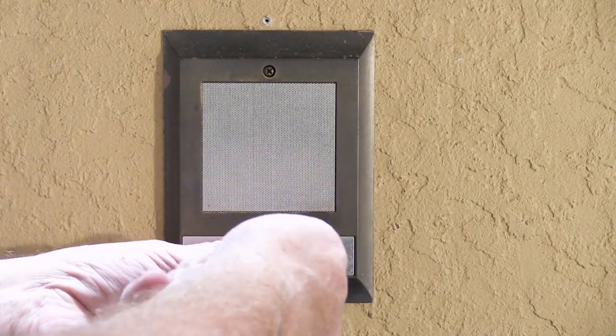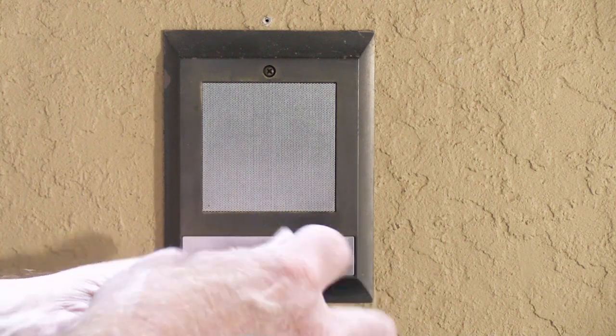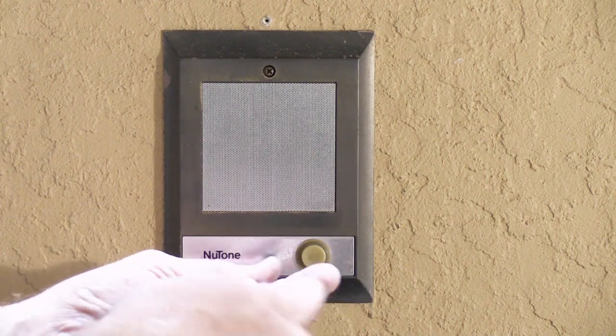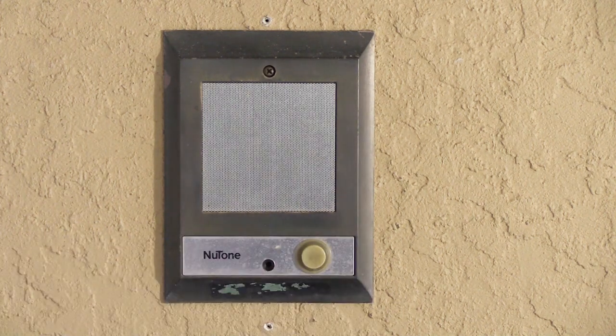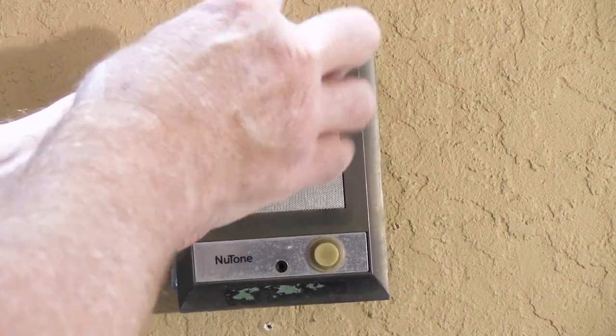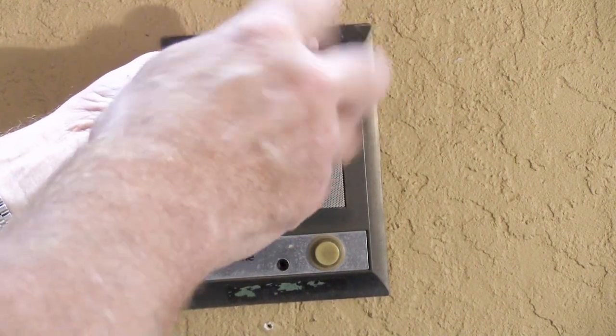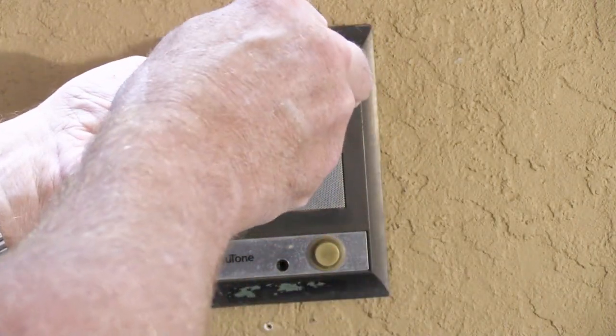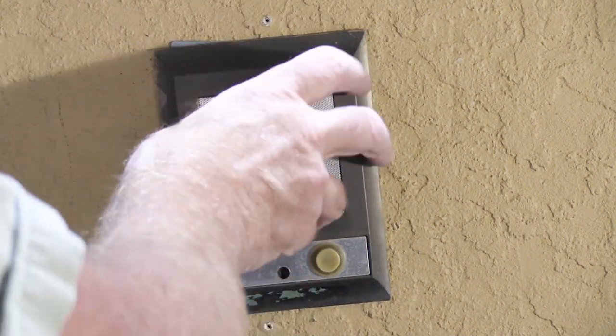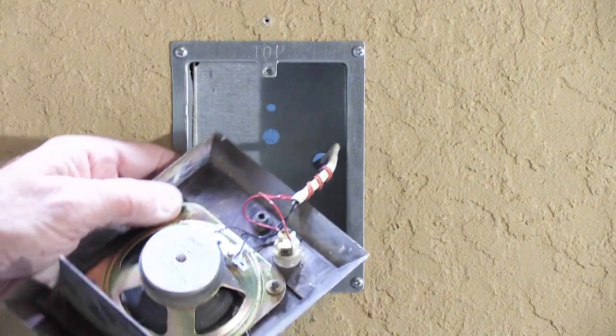The first thing we have to do is take the old ugly one off the wall, and we're simply going to remove the two screws and put them aside. And when we take it off the wall, you're going to find that there's wires connected to the back of it.